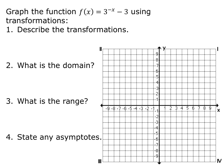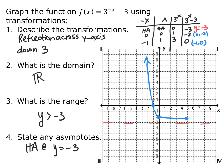Looking at f of x equals 3 to the negative x minus 3 — graph this using transformations and find all the information. The parent function is 3 to the x. The negative attached to the x is a reflection across the y-axis, and the minus 3 shifts it down 3. Using the transformation table, the point originally at (0, 1) is now at (0, negative 2), and the point originally at (1, 3) is now at (negative 1, 0). The horizontal asymptote shifts down 3 to y equals negative 3. Domain is all real numbers, and the range is y is greater than negative 3.